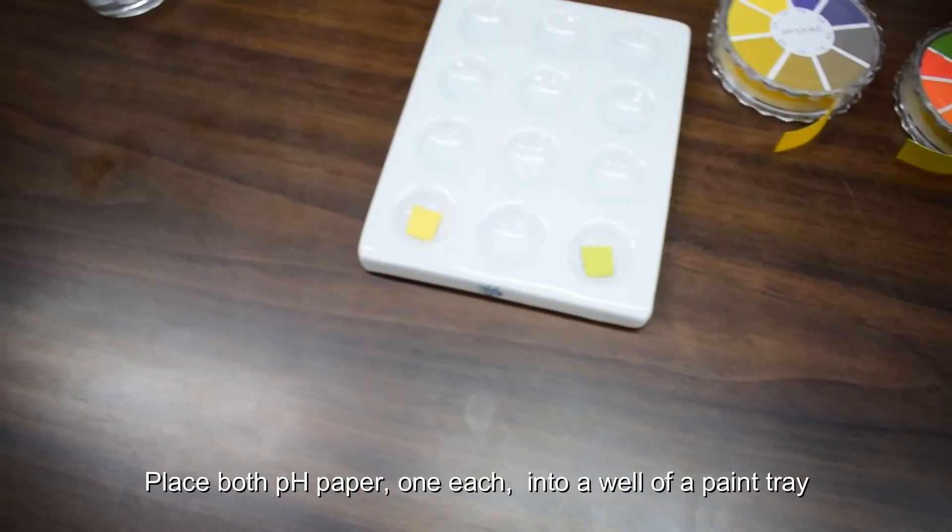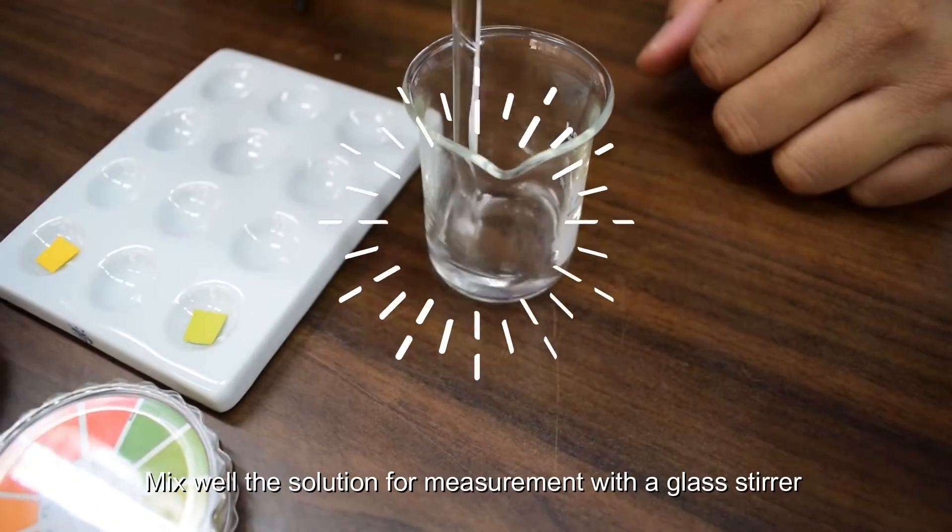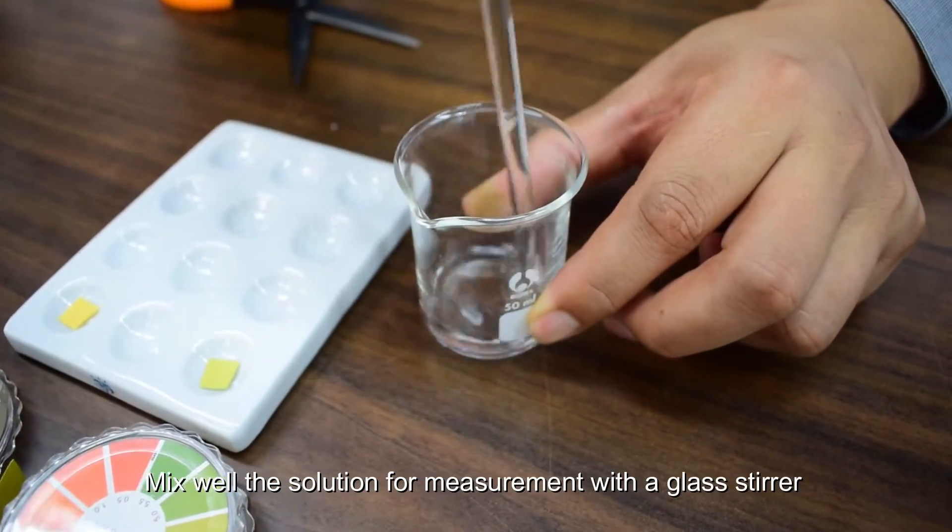Place both pH papers into a well of a pen tray. Mix well the solution for measurement with a glass stirrer.